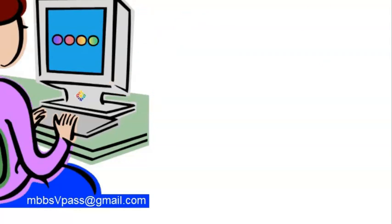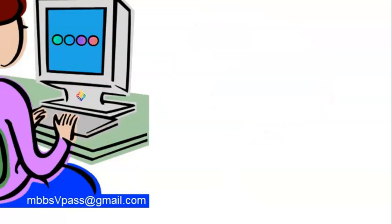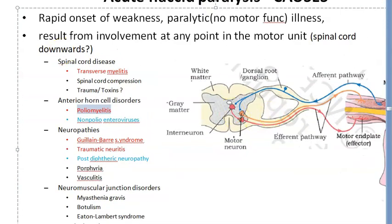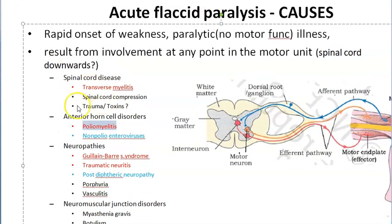Why are we learning all these causes of acute flaccid paralysis? Because in polio there can be acute flaccid paralysis, and you want to rule out other causes. You will collect stool samples from these people and try to find out whether this person has polio or some other cause of acute flaccid paralysis. This is AFP surveillance, which is very important for polio monitoring.